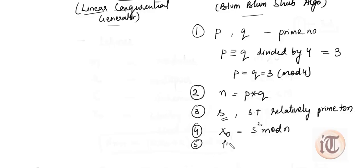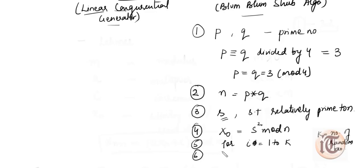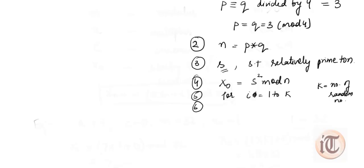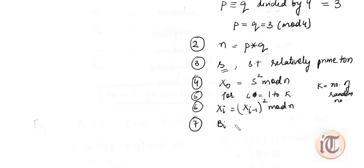Next, we run a loop from i equals 1 to K, where K is the number of random numbers you want to generate. In each iteration, we calculate Xᵢ using the formula: Xᵢ = X(i-1) squared mod N. The last step is that the BBS generator produces a sequence of bits Bᵢ, where Bᵢ = Xᵢ mod 2. These are the seven steps of the BBS algorithm.